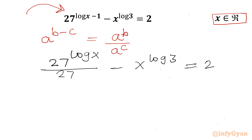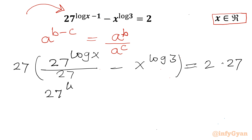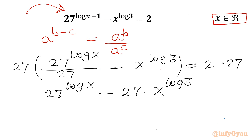Now I will multiply both sides by 27. Expanding the LHS gives us 27^(log x) minus 27 times x^(log 3), and the RHS becomes 54.